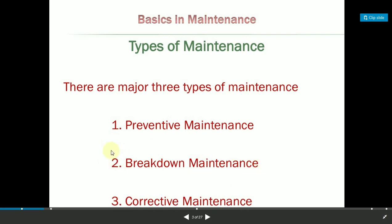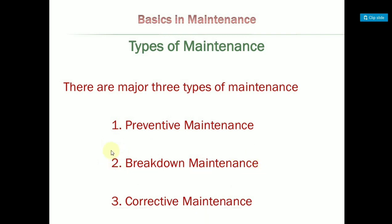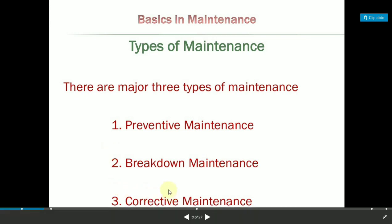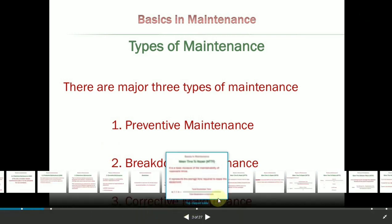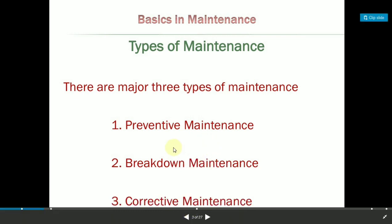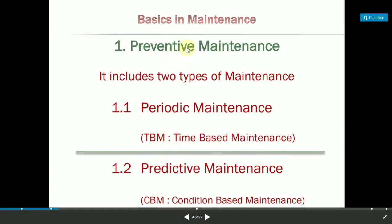In breakdown maintenance, there are sudden failures while the machine is running. There may be sensor failures or cage failures, and electronic controls may also fail — this results in breakdown maintenance. Corrective maintenance involves metrics like MTTR and MTTF, and overall equipment efficiency. We have two types of preventive maintenance: periodic maintenance and predictive maintenance. Periodic maintenance is time-based, while predictive maintenance is condition-based.